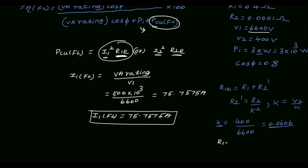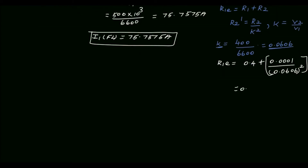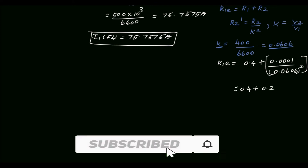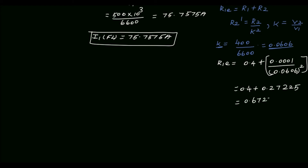Now we calculate R1E, which is R1 plus R2 dash. R1 is 0.4 ohm plus R2 dash, where R2 dash equals R2 divided by k² — that is 0.0001 divided by 0.0606², which gives 0.27225. Adding these together: R1E equals 0.4 plus 0.27225, so R1E is 0.67225 ohm.